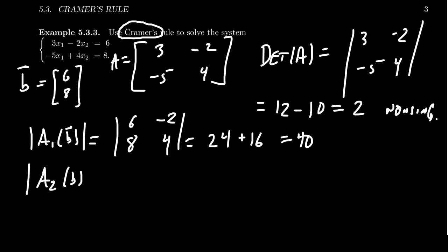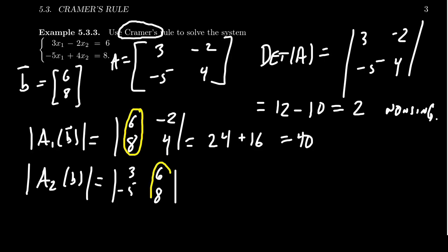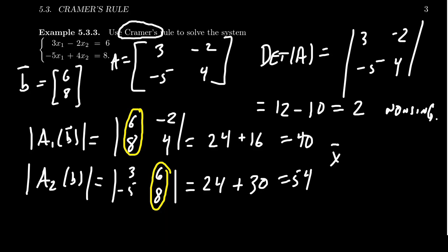For A₂(b), you take the second column of A and replace it with b, giving you [6, 8] there, while the first column remains identical to A: 3 and -5. So for A₁(b) you put b in the first column, and for A₂(b) you put b in the second column. Calculating this determinant: 3 times 8 is 24, and then there's a double negative giving +30 from 6 times 5, so those add up to 54.